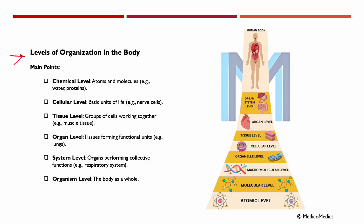Levels of organization in the body. Starting at the chemical level, we have atoms and molecules, like water and proteins, as illustrated here. Building on that, we have the cellular level, where we find the basic units of life, like nerve cells, cardiac cells, and any other cell.